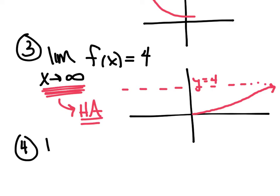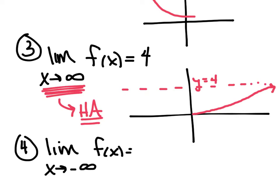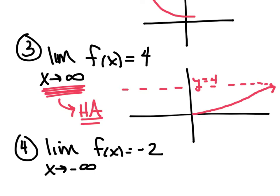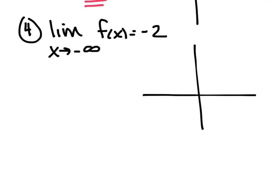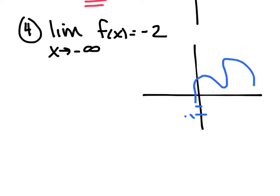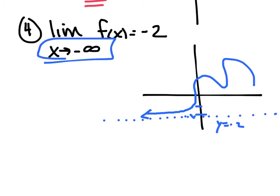Let me throw one more quick example: the limit as x approaches negative infinity of f of x equals negative 2. As I walk towards negative infinity on the x-axis, you can only get to a height of negative 2. As I go out further, I can only reach this height of negative 2, which is telling me I have created a horizontal asymptote at y equals negative 2.